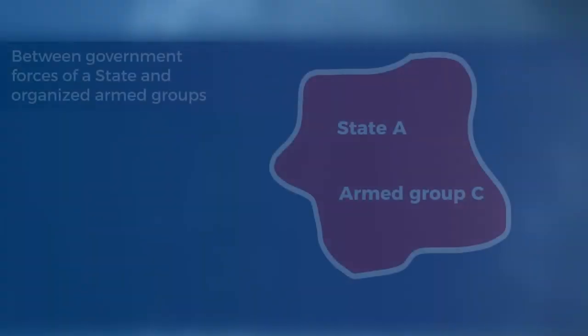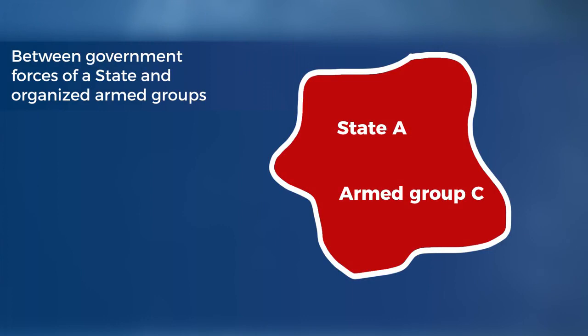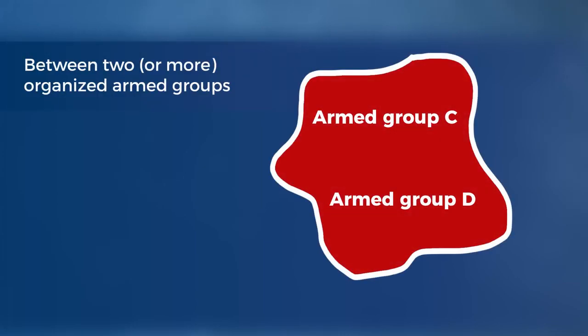These so-called non-international armed conflicts, or NIACs, are often also referred to interchangeably as civil wars or internal conflicts by non-lawyers. NIACs are of a non-international character because they occur between, on the one hand, the government forces of a sovereign state, and on the other hand, what are known as organised armed groups. In addition, in certain cases a non-international armed conflict can also exist between two or more organised armed groups without the involvement of a state, as we'll explore later in this lecture.